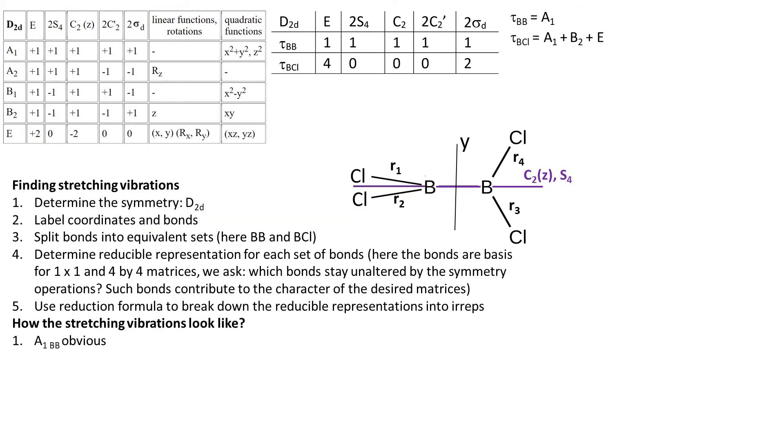Now let's think how these irreps look like. The A1 stretch of boron-boron bond is obvious. It's simply a symmetric stretch. For the 4 BCl bonds, we need to construct symmetry-adapted linear combinations of the basis vectors, that is the vectors that we placed along the bonds.